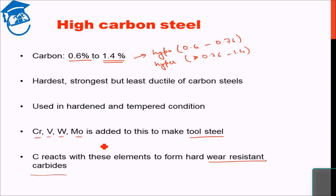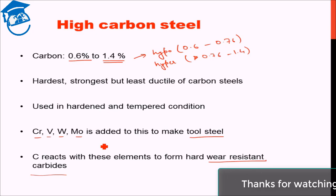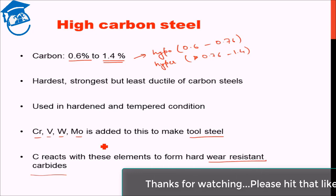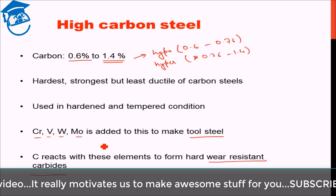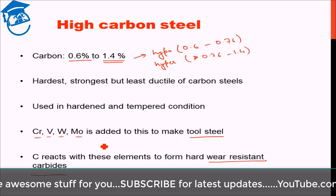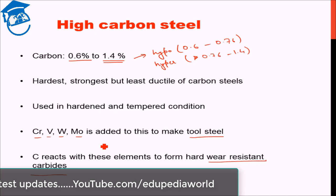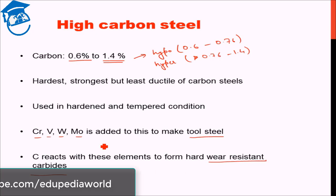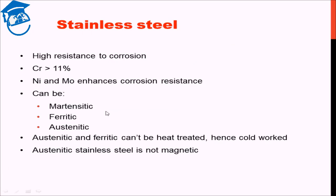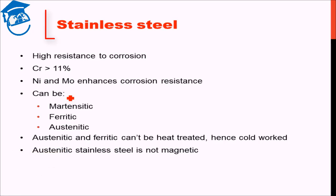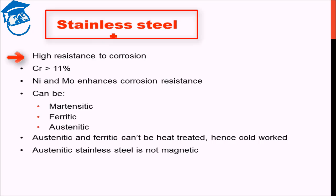To summarize: low carbon steel is very soft but has high ductility; medium carbon steel is heat-treatable with a medium amount of strength and ductility — a compromise between both; high carbon steel has very high strength but compromises largely with ductility. If we add certain alloying elements in very large amounts, we can get stainless steel, which is highly resistant to corrosion.